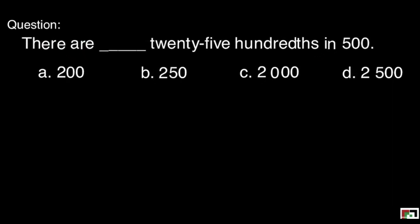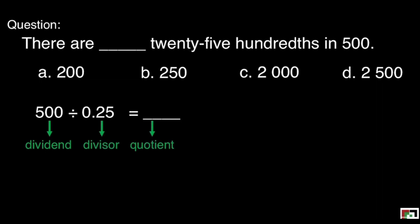Next question. Our equation is 500 divided by 0.25. This is our dividend, divisor, and our quotient. We need to convert our divisor into whole number by moving two decimal places. We will do that in our dividend. Our new equation will be 50,000 divided by 25.